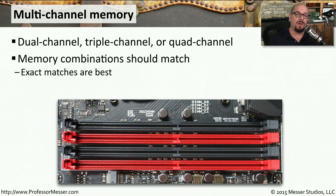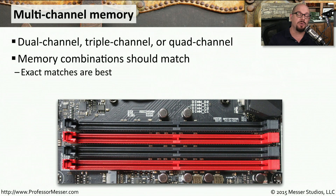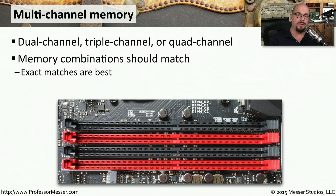If you have a motherboard that supports dual channel memory, you want to use pairs of memory modules. If your motherboard supports triple channel memory, you want to have trios of modules. And a motherboard that supports quad channel memory expects four separate memory modules for the best performance.